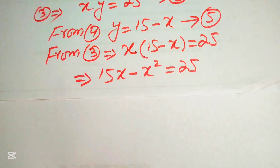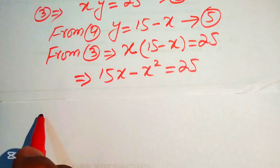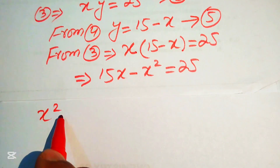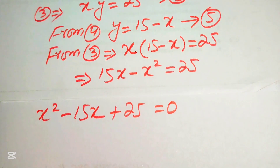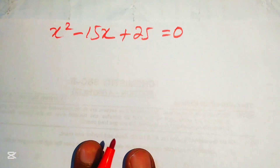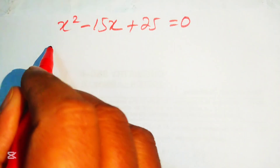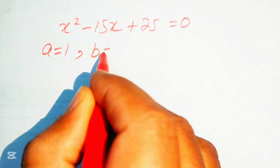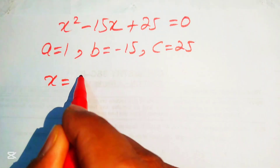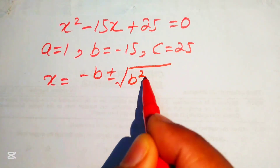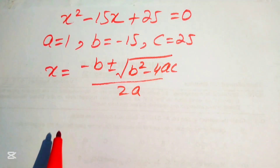This is a quadratic in x. Converting to standard form by moving terms to the right side: x squared minus 15x plus 25 equals 0. The coefficients are a equals 1, b equals minus 15, c equals 25. We apply the quadratic formula: x equals minus b plus or minus square root of b squared minus 4ac, divided by 2a.